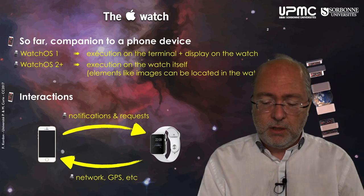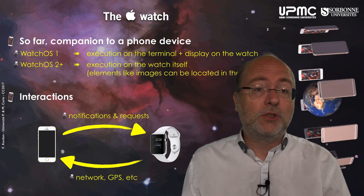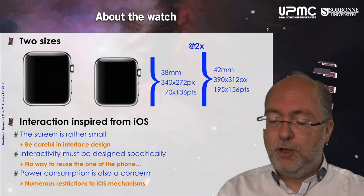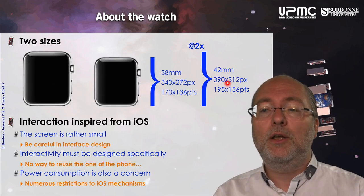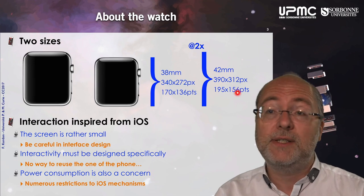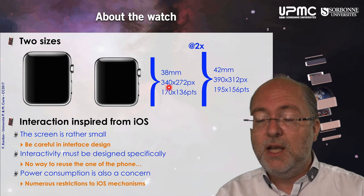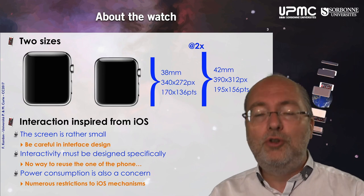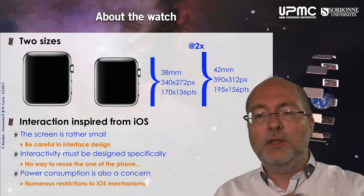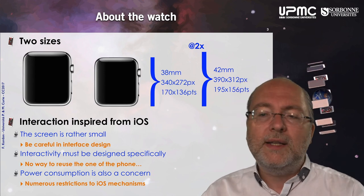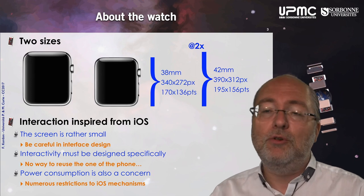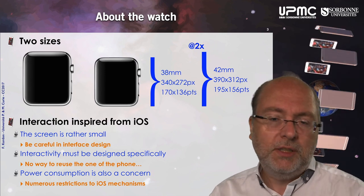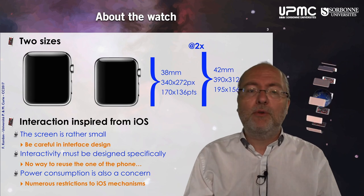Even if your phone is a short distance from your watch, if both are connected to a wireless network, the watch and telephone may still communicate together. You have two sizes of watches: the big one at 42 millimeters, with its pixel and point dimensions, and the small one at 38 millimeters with its own dimensions. It's a 2x retina display, so everything you provide is twice as large as what is displayed because one point equals two pixels — similar to a classical retina device.